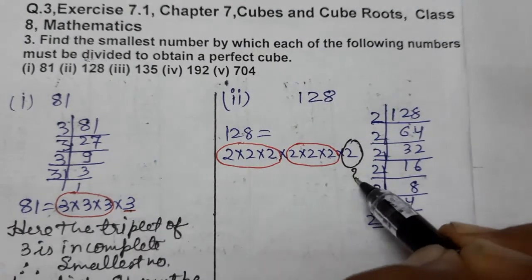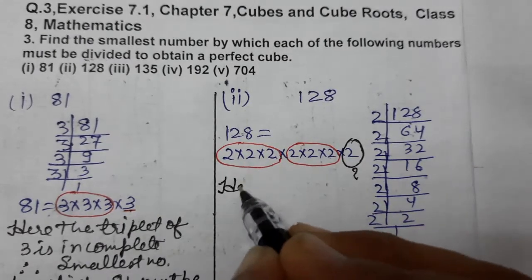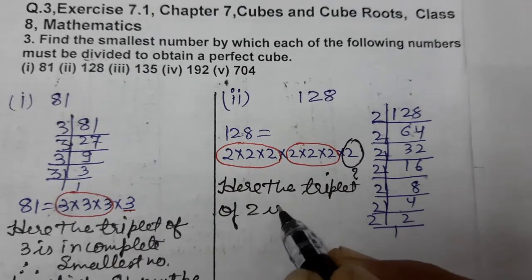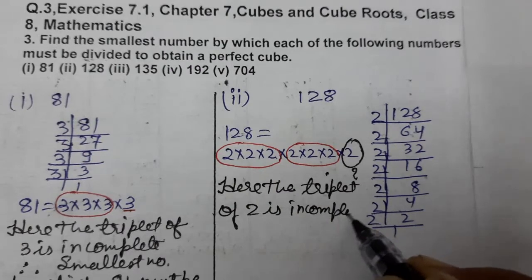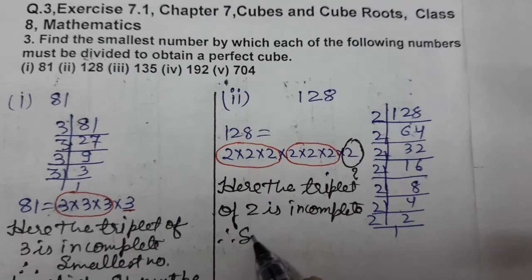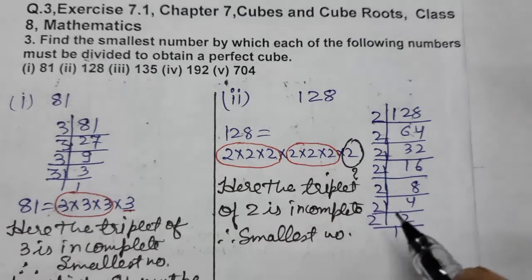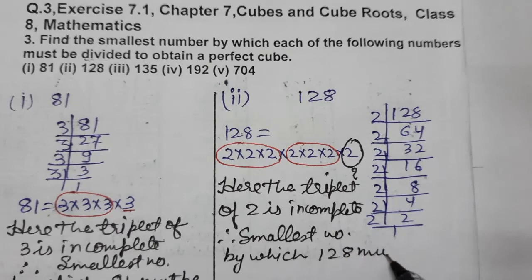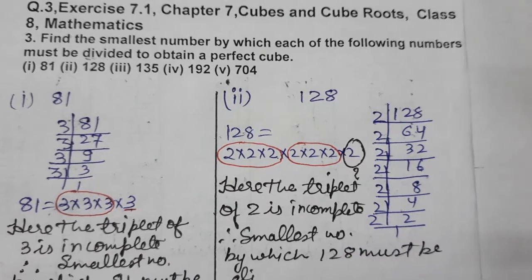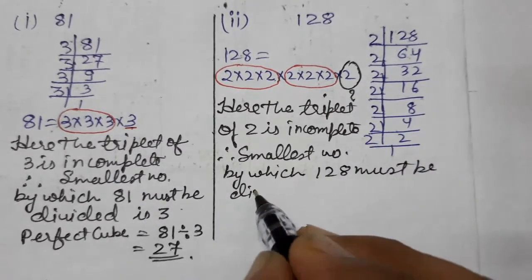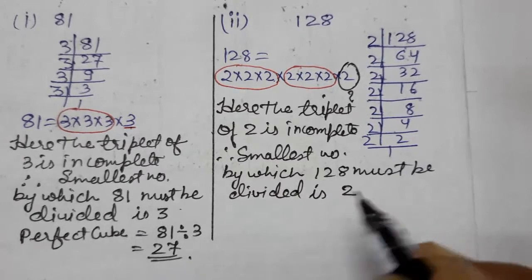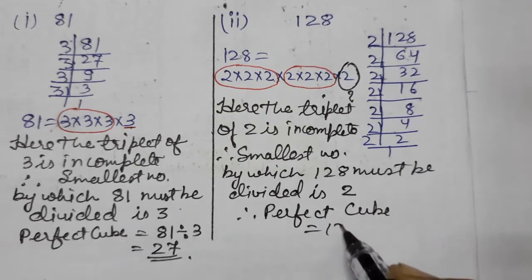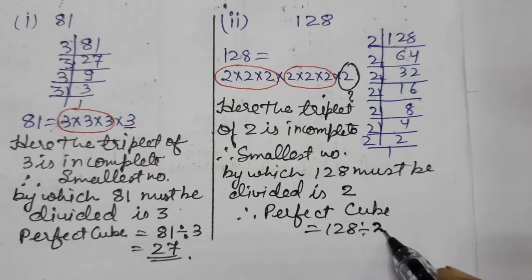How many triplets are there? One triplet of 2 is complete, one more triplet of 2 is complete, and one 2 is left over — we have to remove this. The triplet of 2 is incomplete, therefore the smallest number by which 128 must be divided is 2. The perfect cube is 128 divided by 2, which gives 64.